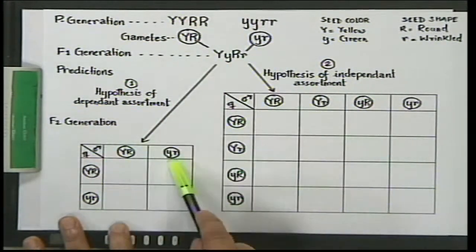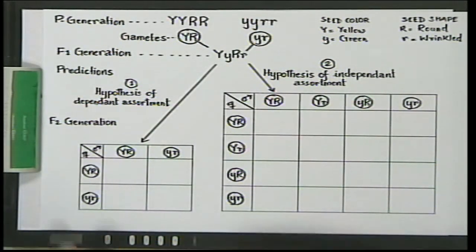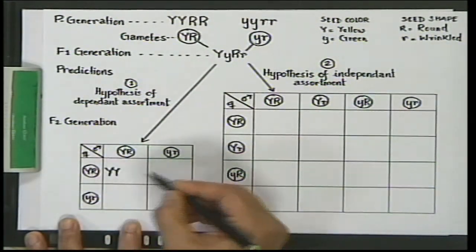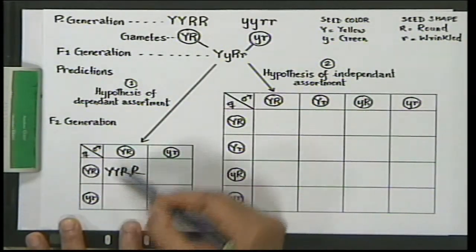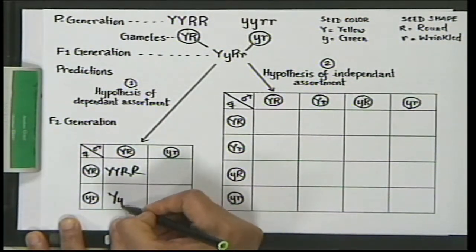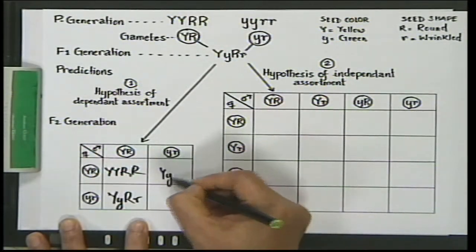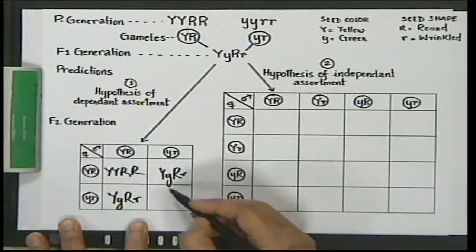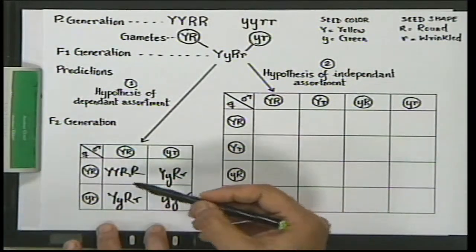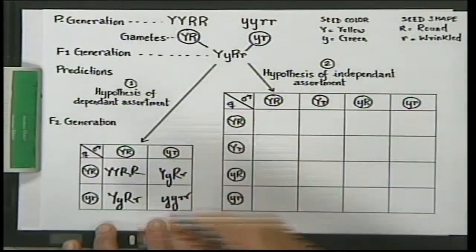If characters always go together, the Punnett square for crossing two YyRr plants would only have gametes YR and yr, producing offspring: YYRR, YyRr, YyRr, and yyrr. These would give either yellow-round or green-wrinkled seeds — only those two phenotypic combinations, since the characters are linked. But if seed color and seed shape are inherited independently, then four types of gametes are possible.